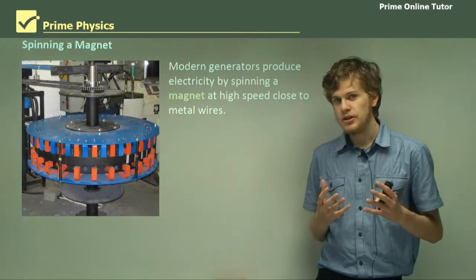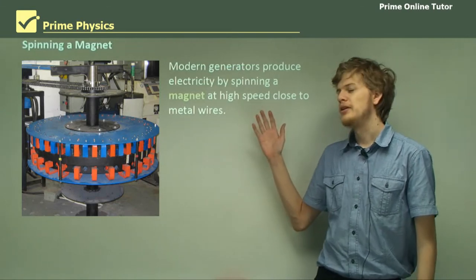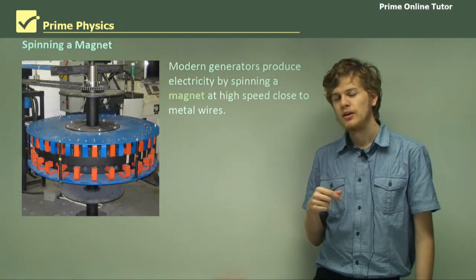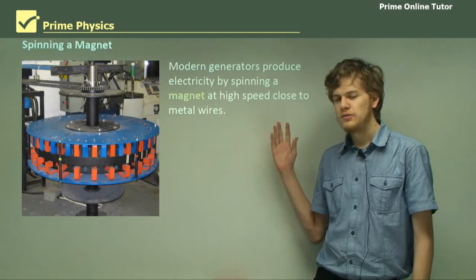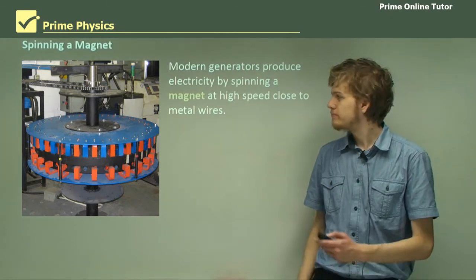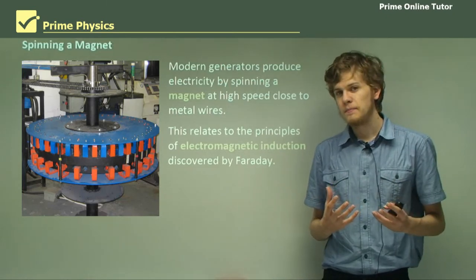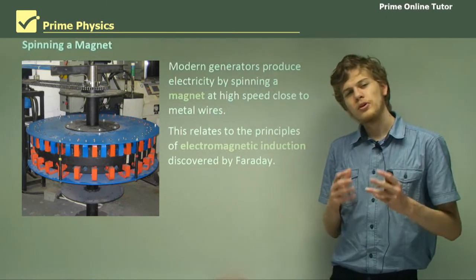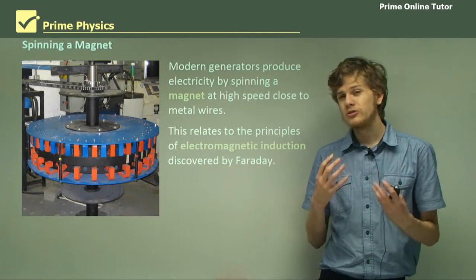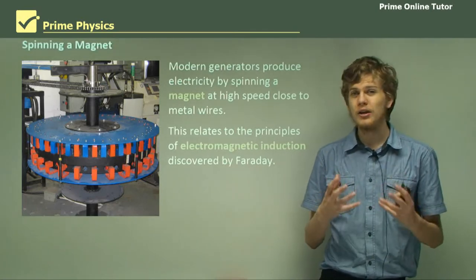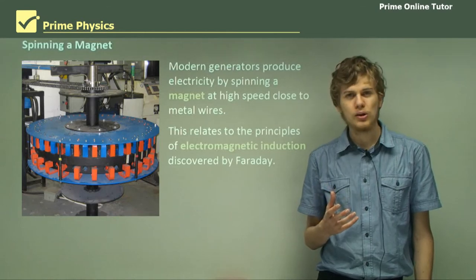In order to produce electricity with a modern generator, we need to spin a magnet at high speeds. The faster we spin it, the more electricity we can get out of it. This relates to the principles of electromagnetic induction. The magnet won't spin freely, so we need to constantly provide it with energy in order to keep it spinning, otherwise it will slow down very quickly.